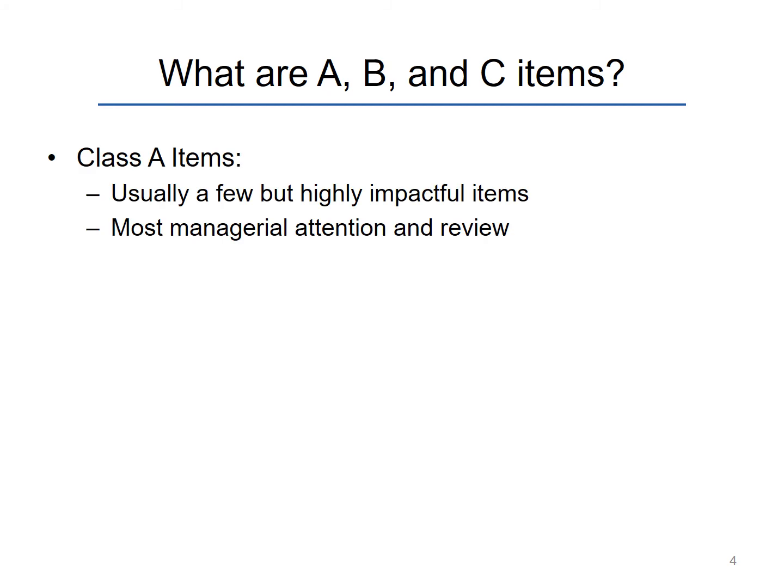Class A items are the most important items. They are usually just a few high-impact items because they matter the most. For example, they may bring in the most revenues, or they may have the highest profit margins, or excel in some other metric. Therefore, they may require the most manager attention and review.